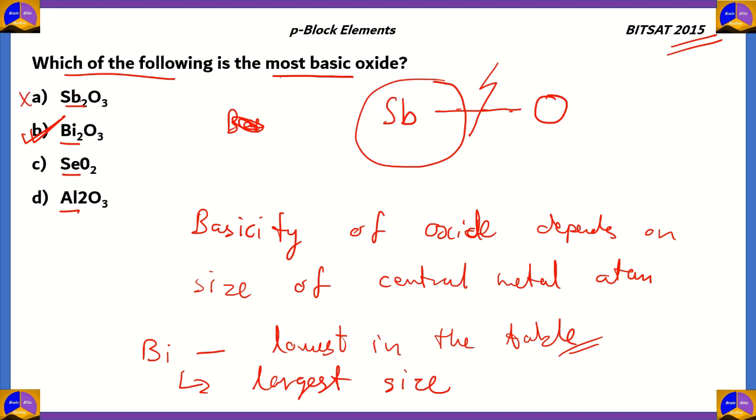Option A is incorrect because antimony is just above bismuth, which makes it smaller. Because as we go down the group, the size increases. Selenium and aluminum aren't in the same group, but we can see that selenium is in the previous period, which makes it even smaller, even though it's in the next group. Option D has to be incorrect because Al2O3 is amphoteric, which means that it works both ways—it works with acids as well as bases. This is an amphoteric oxide and not a basic oxide. Among the four options, option B, Bi2O3, bismuth oxide, is the correct answer for this question asked in Bitsat 2015.